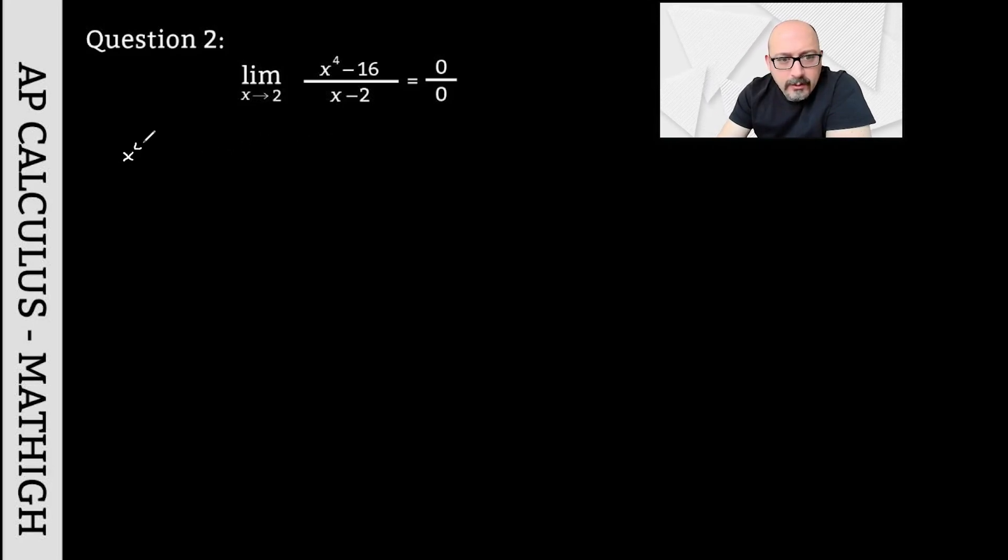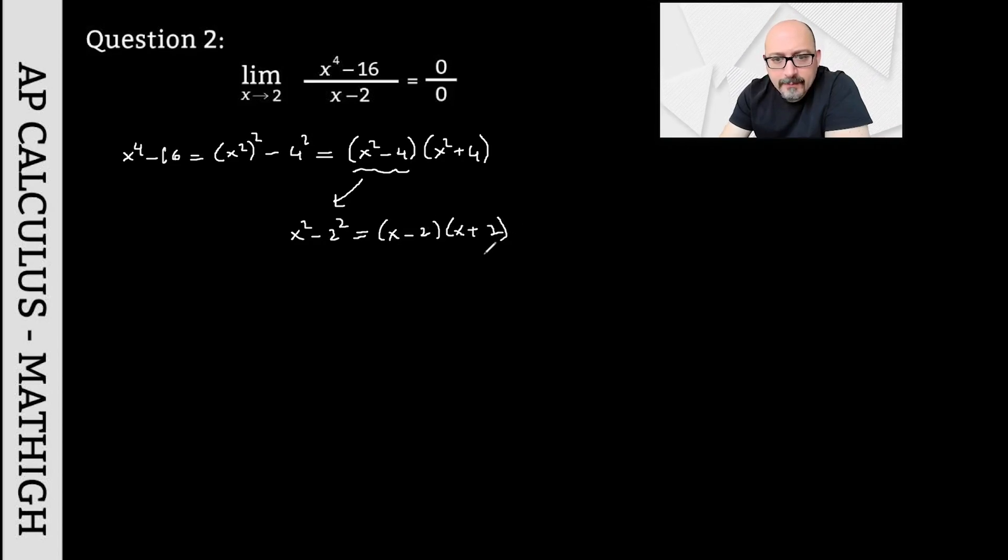First, I will write x to the fourth minus 16 as the square of x squared minus the square of 4. If you use the difference of squares, you get (x²-4) times (x²+4). But this x squared minus 4 can be transformed back into the difference of squares as (x-2) times (x+2).